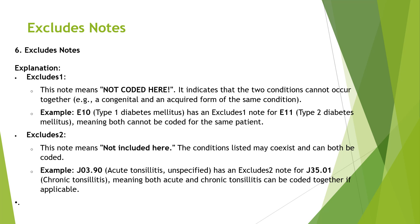For example, if the same documentation mentions both type 1 diabetes mellitus and type 2 diabetes mellitus, when you check the notes for type 1 diabetes mellitus, you'll see an Excludes 1 note for E11 — meaning you cannot code both type 1 and type 2 diabetes mellitus for the same encounter for the same patient. There are many other examples, such as acute pharyngitis with influenza conditions.